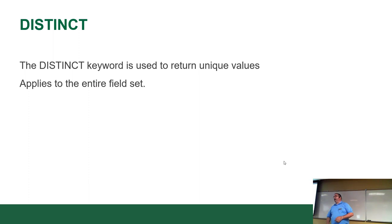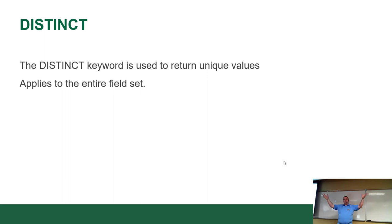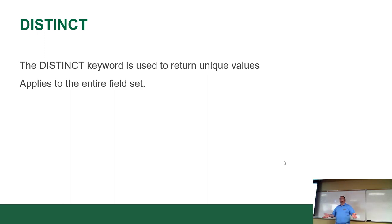DISTINCT returns unique values. It looks at every column and only returns unique rows. If you had three people with the first name Dan and you only wanted to know if the name Dan appears in the database, you don't need three rows back. Say 'SELECT DISTINCT first_name' and if Dan appears three times, it'll give you Dan once. Distinct gives you uniqueness across the whole data set.